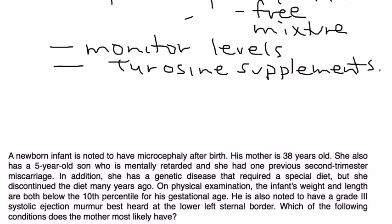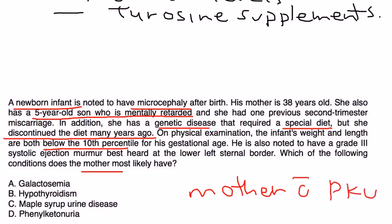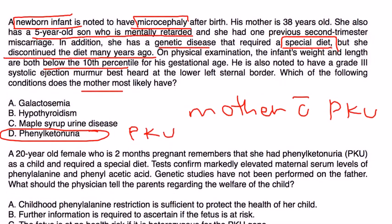Clinical vignette 1: A newborn infant is noted to have microcephaly. The mother is 38 years old, has a five-year-old son who is mentally retarded, had a previous second trimester miscarriage, and has a genetic disease requiring a special diet that she discontinued years ago. The infant's weight and length are below the 10th percentile, and there is a grade three systolic ejection murmur. This is a classic scenario of a mother with PKU who didn't control her phenylalanine levels — the phenylalanine crossed the placenta and was teratogenic to the fetus, resulting in microcephaly.